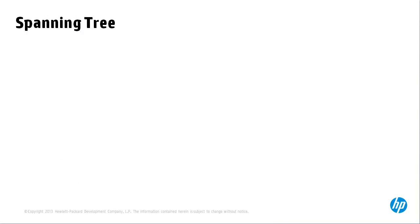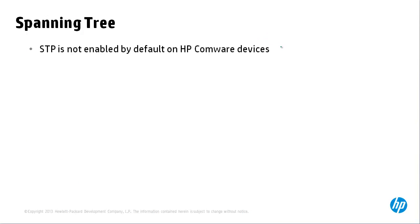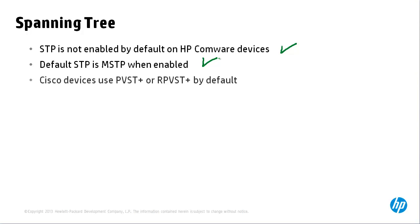Some guidelines with regards to spanning tree: spanning tree is not enabled by default on HP Comware devices. When spanning tree is enabled, the default spanning tree used is multiple spanning tree. Cisco devices use per-VLAN spanning tree plus or rapid per-VLAN spanning tree plus by default. Rapid PVST is compatible with PVST, so based on the BPDUs received, a rapid PVST device will fall back to using PVST with a device that only supports PVST.